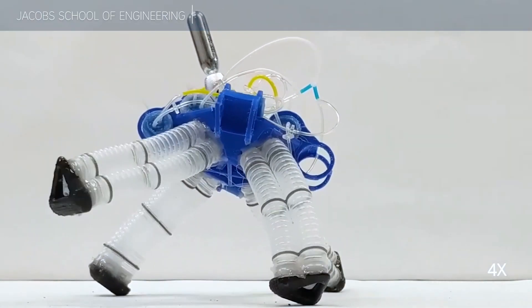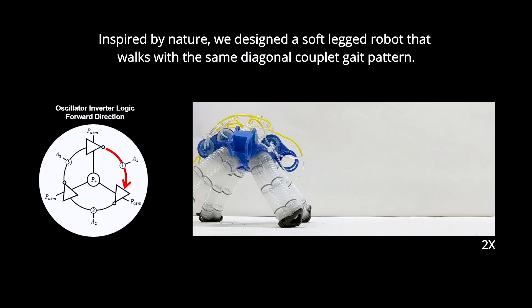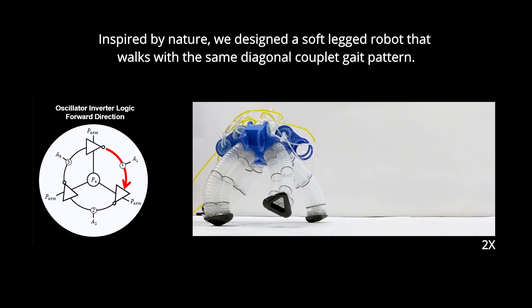This robot doesn't need electronics to be able to walk. In fact, it doesn't need electronics at all. The robot is controlled and powered by pressurized air.